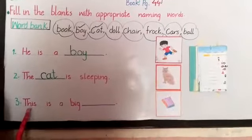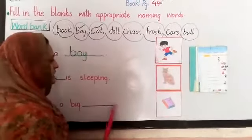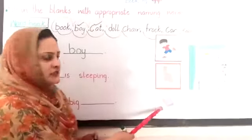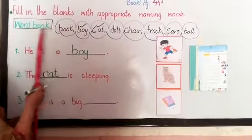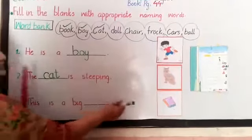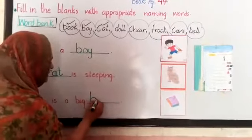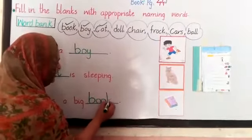Look at the third sentence. This is a big dash. What its name? Ji iska naming word kutahin kya hai? Search in the word bank book. Aapne book ko tick karna hai. और इसका naming word hai book. B double o k Book.